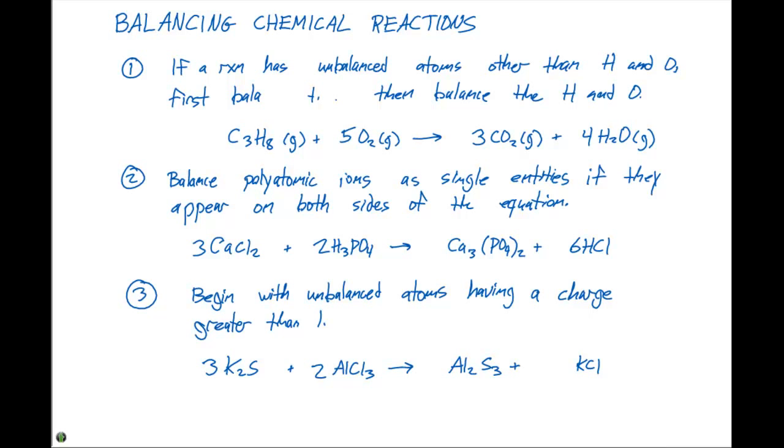The KCl, we now have three times two or six potassiums and two times three or six chlorines. So we need to put a six in front of the KCl. So that will allow us to kind of double check to make sure that we have the right number of atoms on each side of this particular equation.